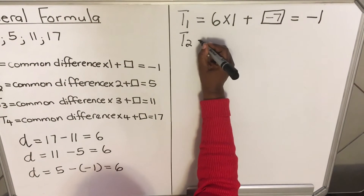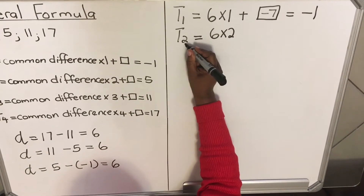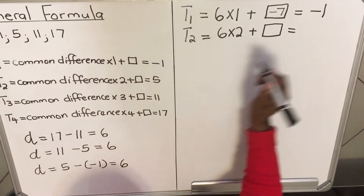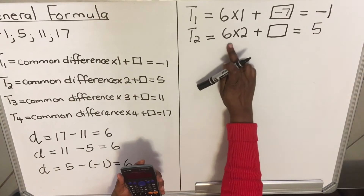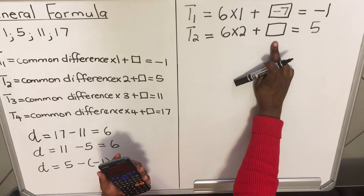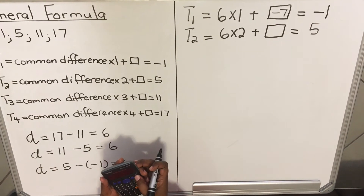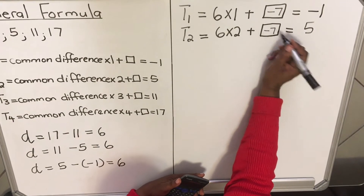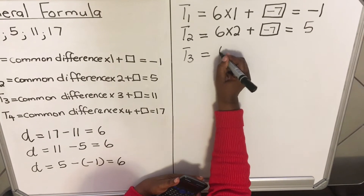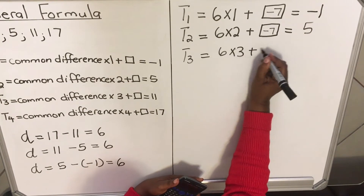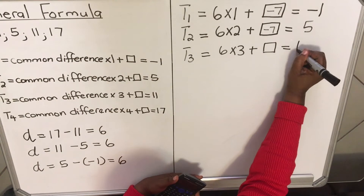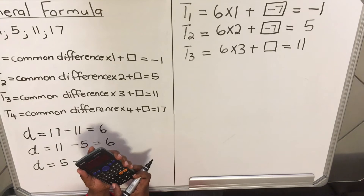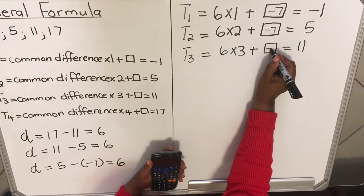Term 2 equals 6 times 2 plus a particular number, and must equal my Term 2 which is 5. So 6 times 2 is 12; to find the number: 5 minus 12 gives minus 7. Term 3 equals 6 times 3 plus a particular number, equaling 11. So 6 times 3 is 18; 11 minus 18 gives minus 7.